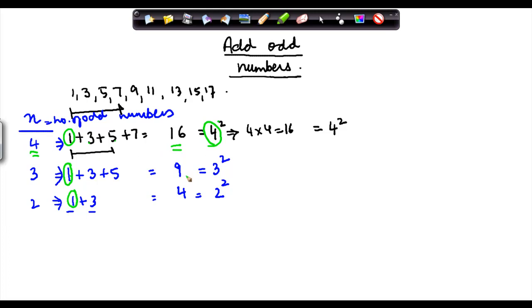So suppose here I would have taken, let's say for example, n odd numbers. What would have been the square? So for 2 odd numbers the square was 2 squared, for 3 it was 3 squared, so for n odd numbers the square will be n squared, because n is the number of odd numbers that we have.